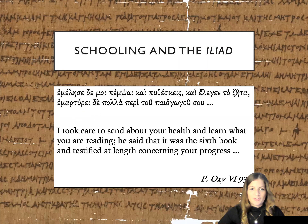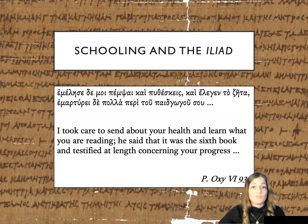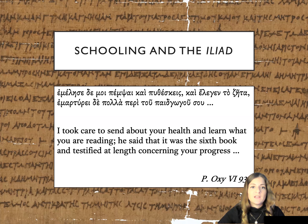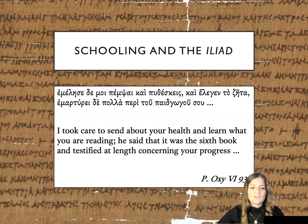So why do we even have this tradition? The Iliad was part of the canon of education for any scribe learning Greek in the bilingual education system of Greco-Roman Egypt. We know this not only because of the sheer amounts of fragments that we have of the Iliad from Egypt, but also because of adjacent sources, like this letter that a concerned mother writes to her son, ensuring that he's continuing in his reading and presumably also copying of book six during his scribal education. She writes: 'I took care to send about your health and learn what you are reading. He' — she's referring to his tutor — 'said that it was the sixth book, and testified at length concerning your progress.'